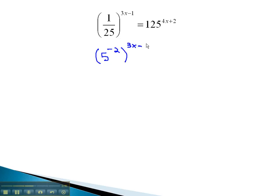Keeping the 3x minus 1 on the outside. The 125 is 5 to the 3rd power, keeping the 4x plus 2 on the outside.